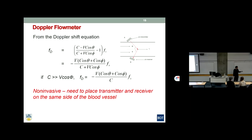Looking at this equation: the Doppler shift FD equals V times cosine theta times cosine phi, divided by C (the speed of sound), times FS (the source frequency). C and FS are constants; cosine theta and cosine phi can be fixed by placement. So FD is proportional to V, the blood flow velocity. For a non-invasive device, we cannot place transducers on opposite sides, so both the transmitter and receiver are packaged together on a single chip, and the reflected ultrasound comes back to the receiver.